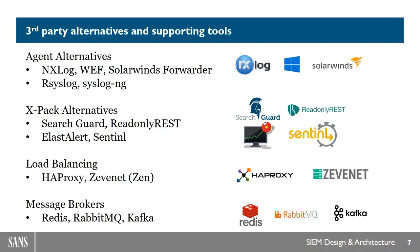If you aren't interested in XPAC or have other agent solutions already deployed, you can still use those with the Elastic Stack. For agents, NXLog is one of our favorites — it's very robust, priced rather low, has outstanding features, and is compatible with many different types of operating systems and log sources. For security features as alternatives to XPAC, there are packages called Read-Only REST and SearchGuard, which are free for basic securing of your Elastic Stack and also offer commercial versions for more advanced features.